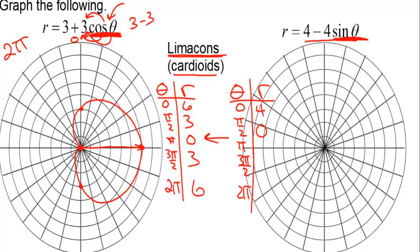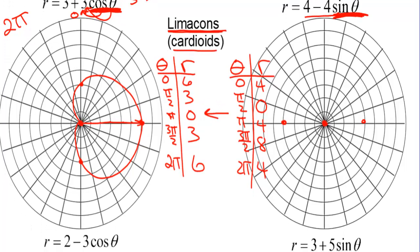Plugging in pi for sine gives 0, so r is 4. At 3 pi over 2, sine of 3 pi over 2 is negative 1, so that becomes 4 plus 4, which is 8. And 2 pi is back to 4. Plotting: at 0, r is 4; at pi over 2, r is 0 — it touches the pole there; at pi, r is 4; at 3 pi over 2, r is 8 — all the way to the bottom; and back to 4. Starting from the bottom, go a little wider, bounce off the pole, go a little wider, and come around like that.